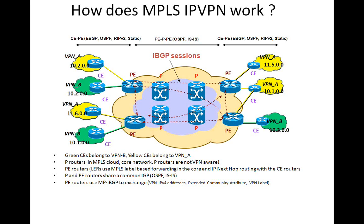The service provider is going to build all connectivity within his network and take responsibility for connecting all the yellow VPN sites on the left to the yellow VPN sites on the right, and the green VPN sites on the left to the green VPN sites on the right. This connectivity is typically provided using IBGP.